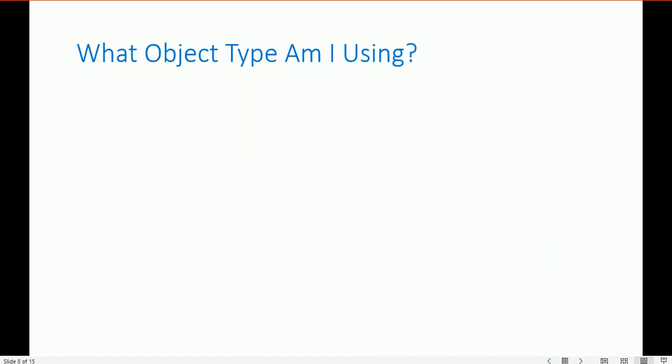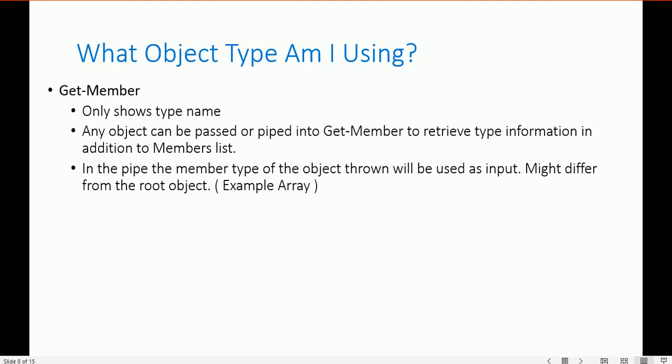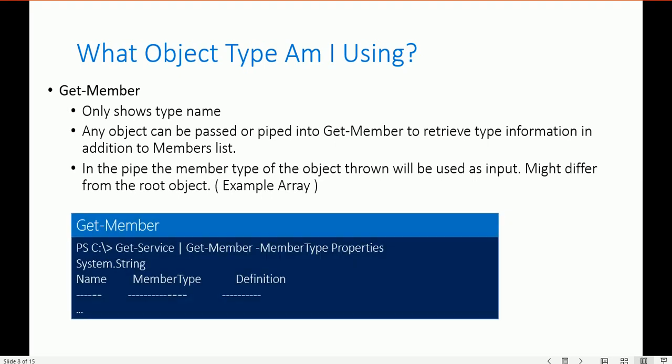What object type am I using? Get-Member shows only the type name. An object can be piped into Get-Member to retrieve type information in addition to the member list. The type of object passed in the pipeline will be used as input, which might differ from the root object. Let's take an example of how we can use Get-Member.